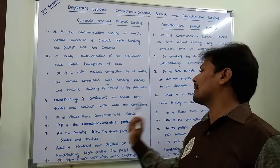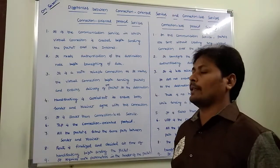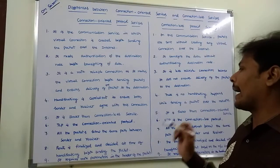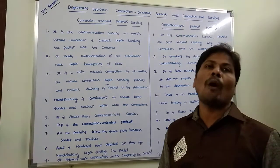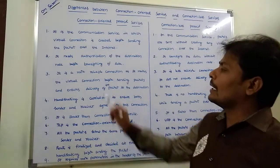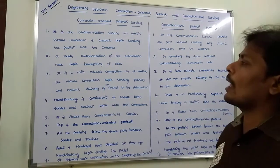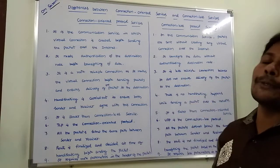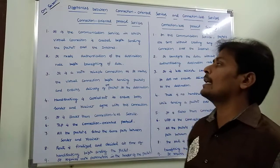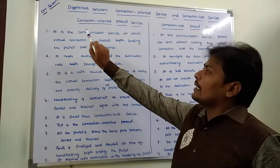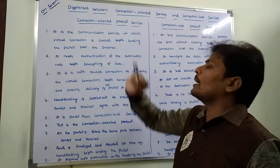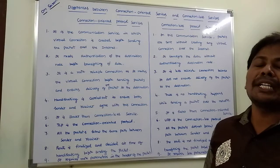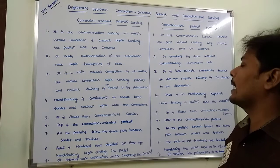Connection-oriented service is slower than connection-less service; connection-less is faster than connection-oriented service. Hand-shaking protocol is carried out between the sender and receiver with an agreement in connection-oriented service; there is no hand-shaking protocol in connection-less service. Connection-oriented is a more reliable connection; connection-less is a less reliable connection. Connection-oriented needs authentication of the destination node before transferring the data; there is no authentication in connection-less service. A virtual connection is created before sending the packet in connection-oriented service; there is no establishment of virtual connection in connection-less service.